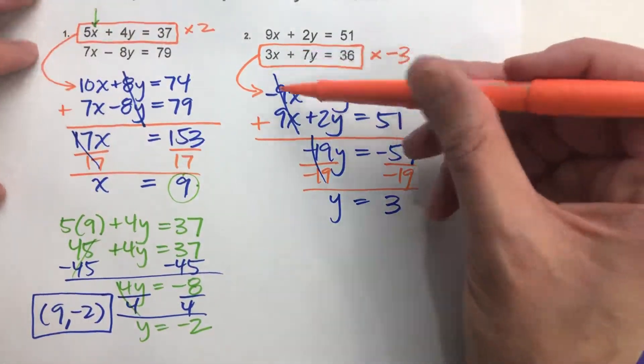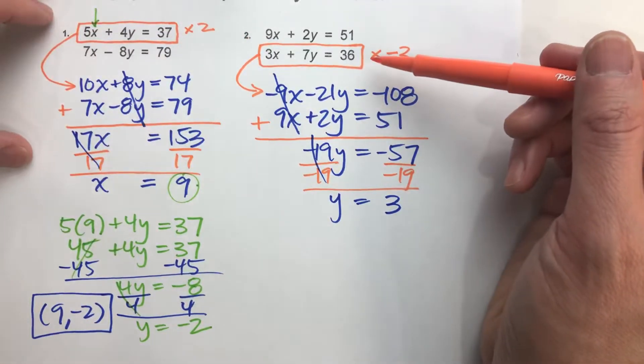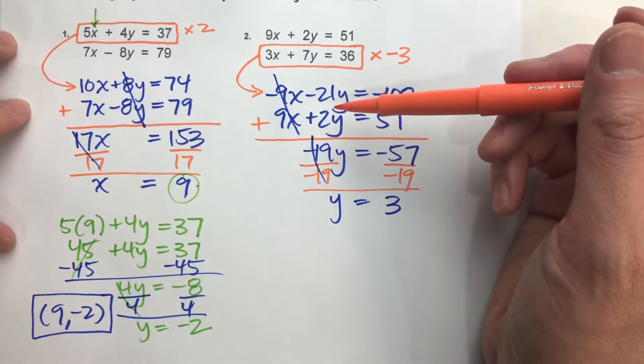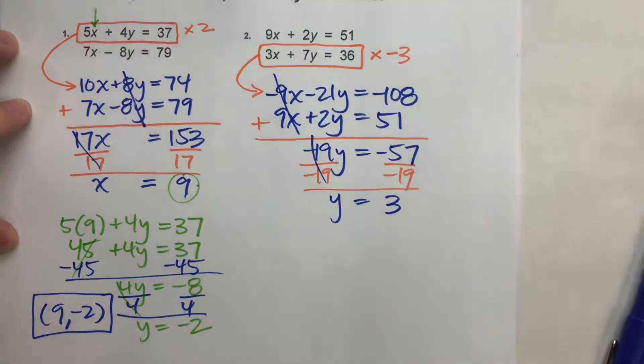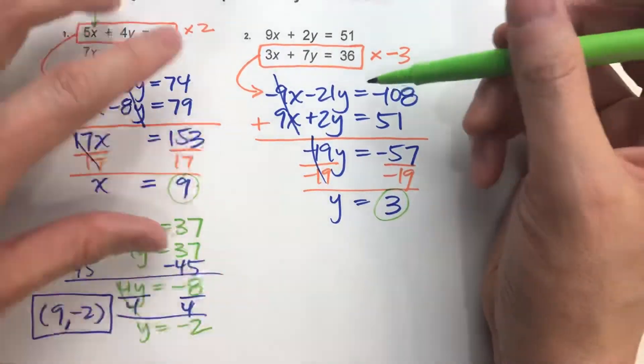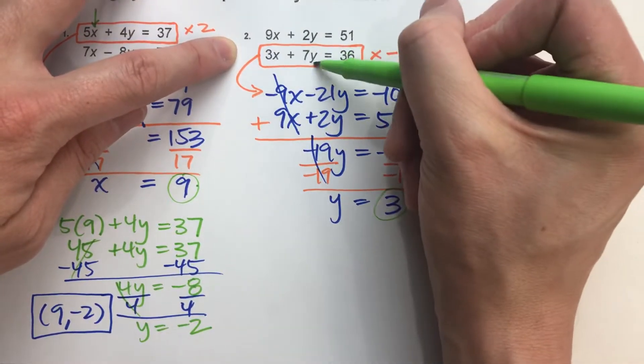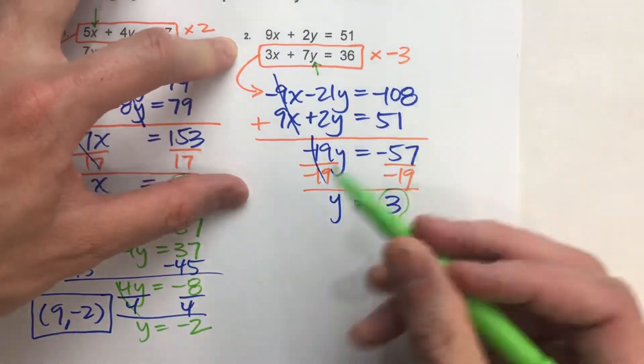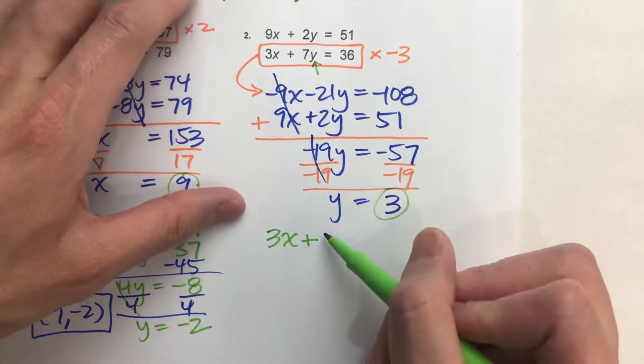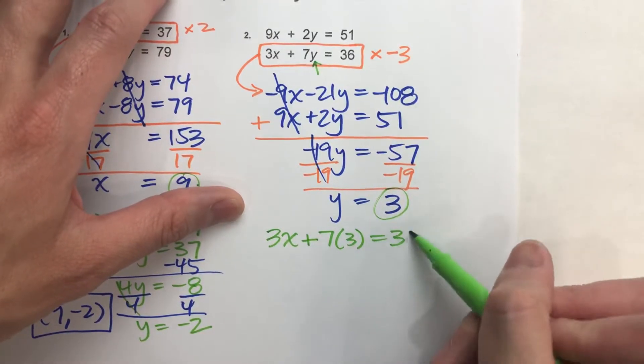Trying to figure out if you can multiply one of these equations by a number so that either the x's or y's can easily be eliminated. Let's finish up this problem. So y is 3. I'm going to put it back into one of the original equations. Let's put in this bottom one because there's smaller numbers here. I'll put it in for y. So 3x plus, instead of 7 times y, 7 times 3, because y is 3, equals 36.